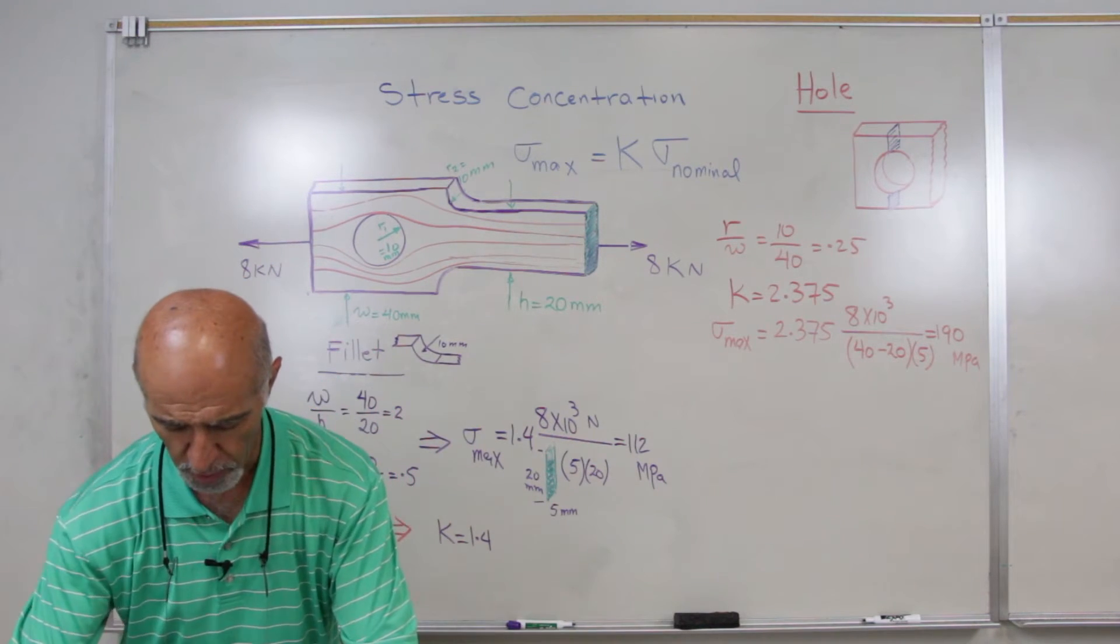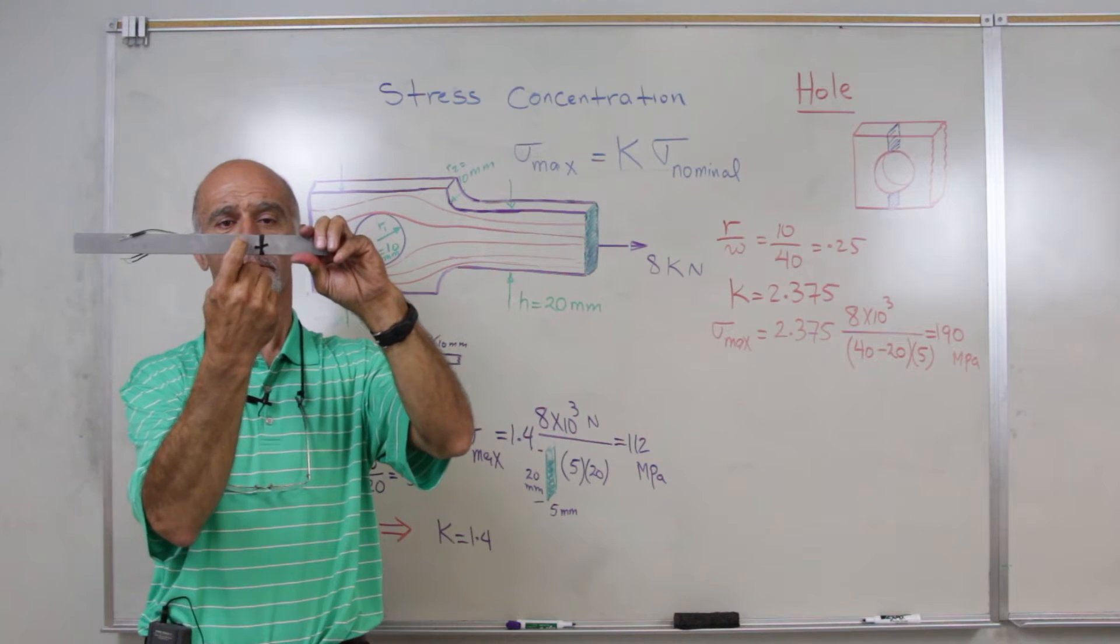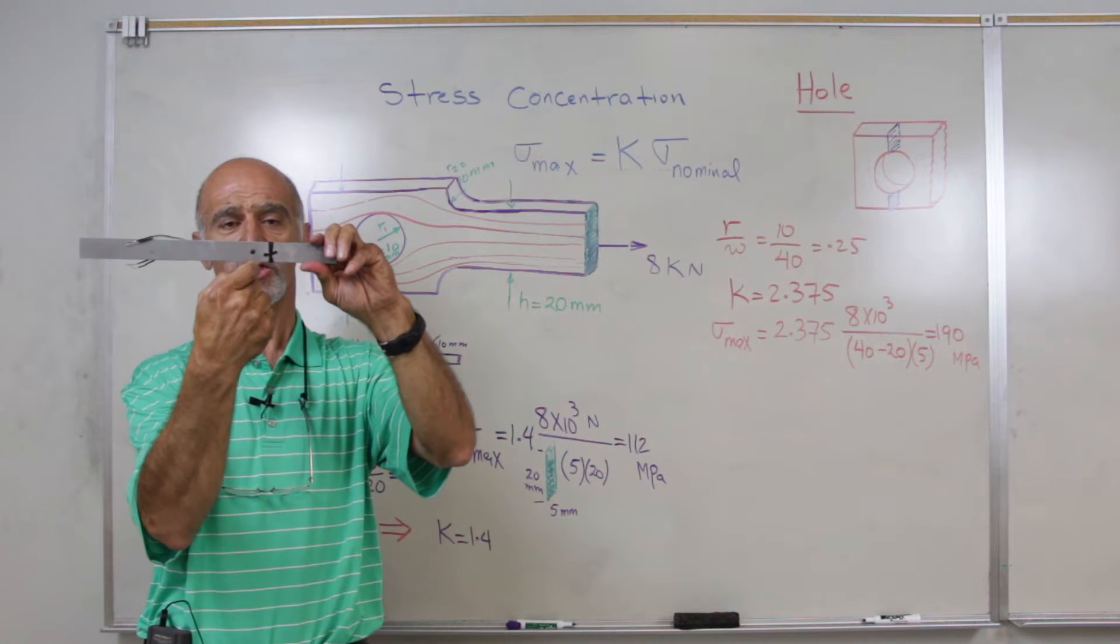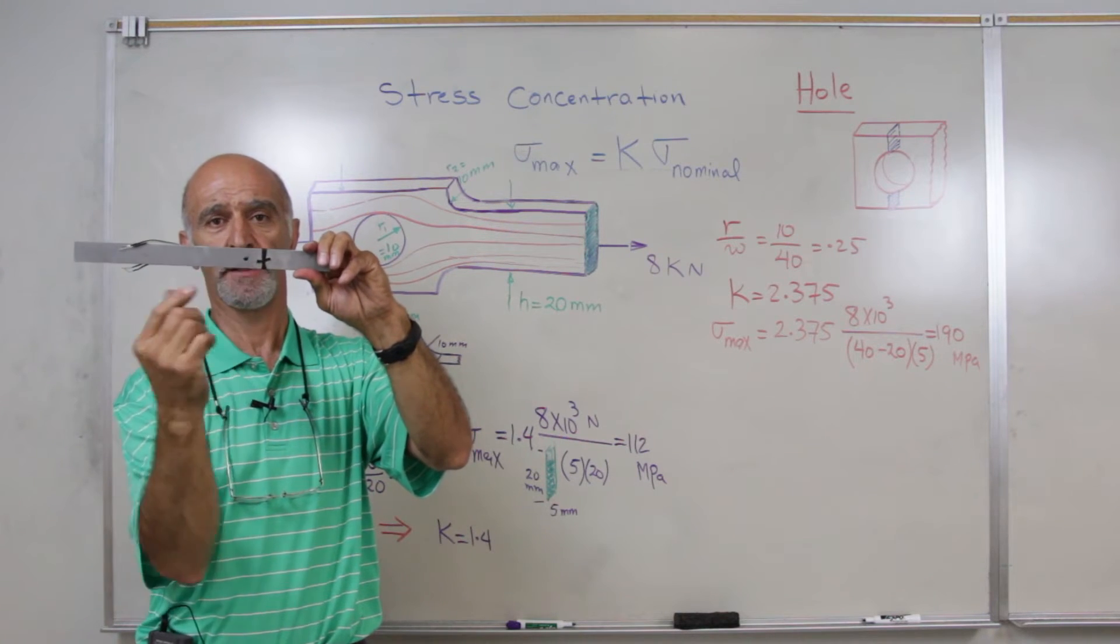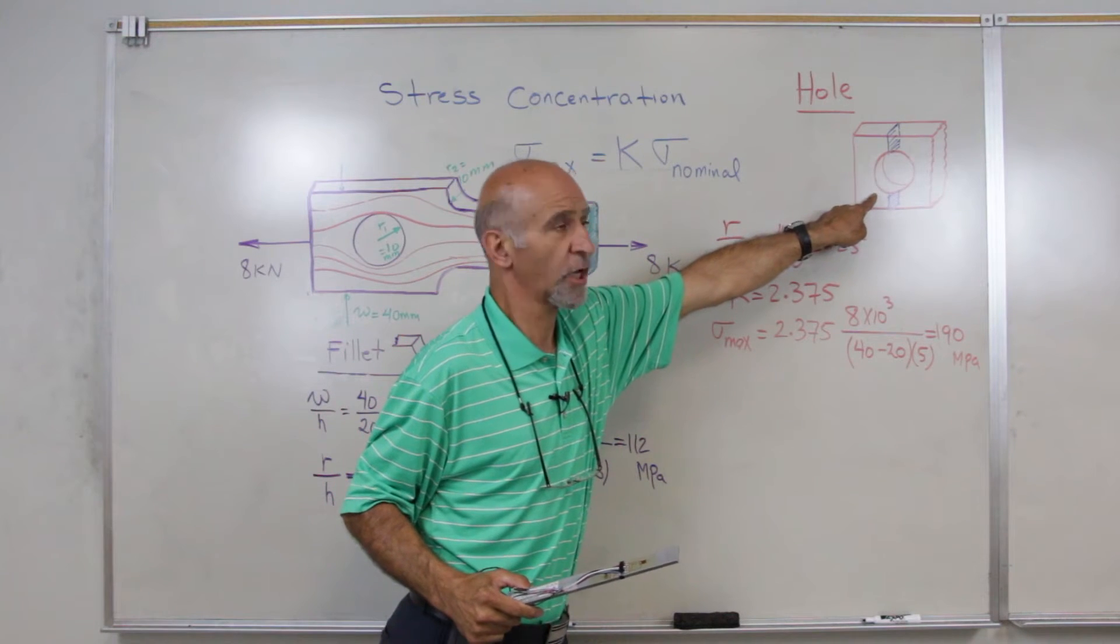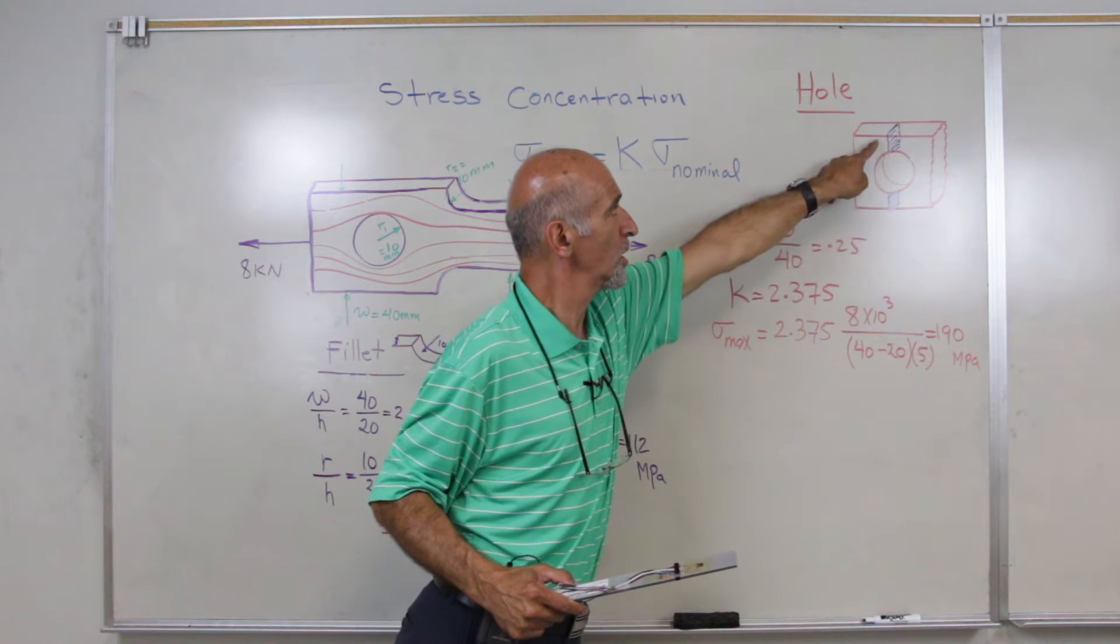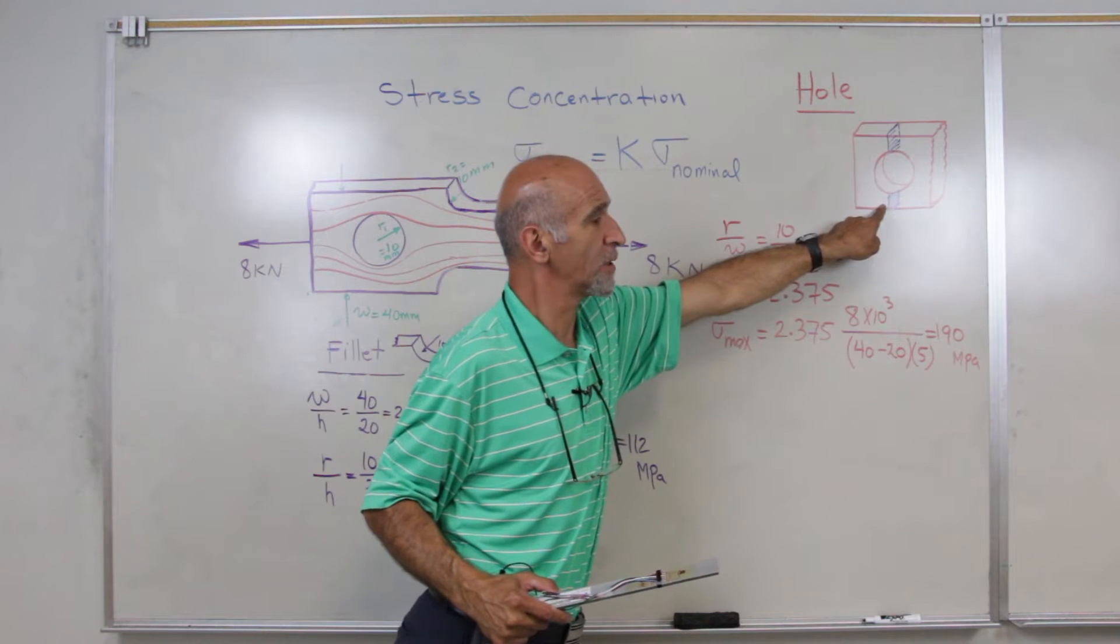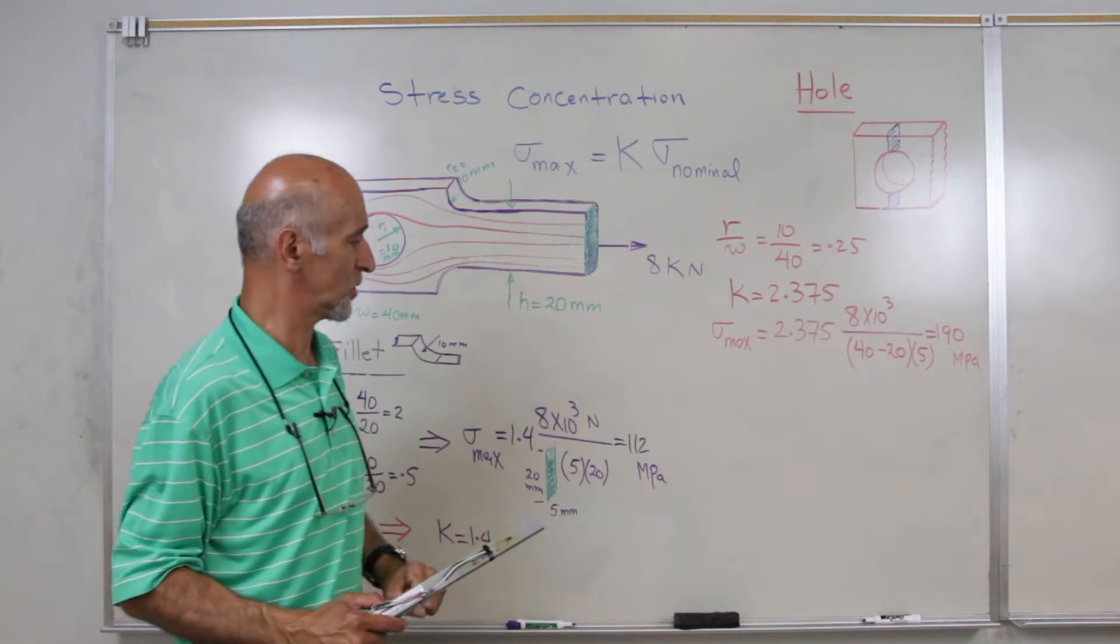In this bar, however, the nominal area is the minimum area going across this hole between this part and this part above. I have shown that in this picture here, where the nominal area considers these two areas added up in order to calculate the nominal stress.